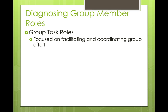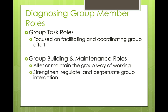When you diagnose group member roles, here are the three categories: Group task roles, where the person is focused on facilitating and coordinating group effort, working toward the product — what do we need to do to be effective? Group building and maintenance roles — how do we make our team better? How do we make sure everyone is heard? How do we perpetuate group interaction and stay on track with Tuckman's stages?